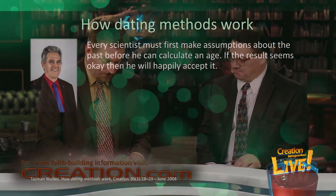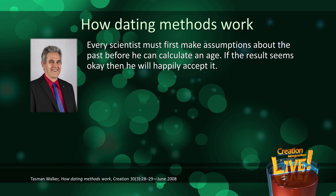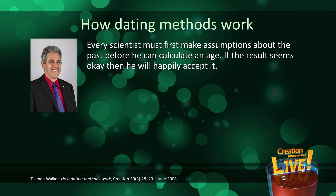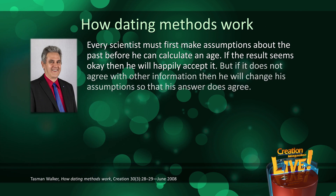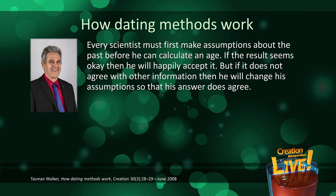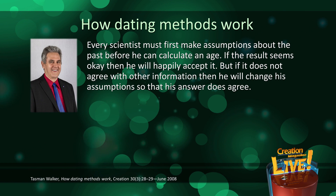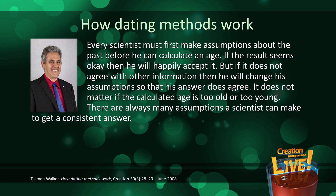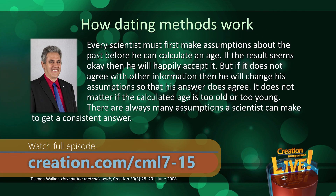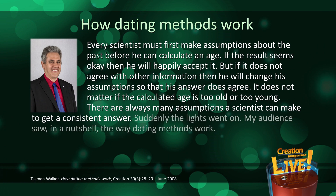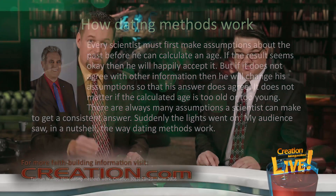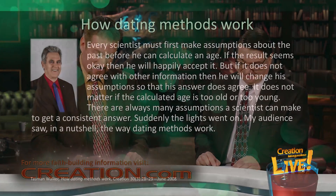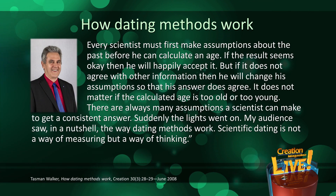The article concludes: Every scientist must make assumptions about the past before he can calculate an age. If the result seems okay, then he will happily accept it. But if it does not agree with other information, then he will change his assumptions so that his answer does agree. It does not matter if the calculated age is too old or too young — there are many assumptions a scientist can make to get a consistent answer. Suddenly, the lights went on. My audience saw, in a nutshell, the way dating methods work. And this last line is profound: Scientific dating is not a way of measuring, but a way of thinking.